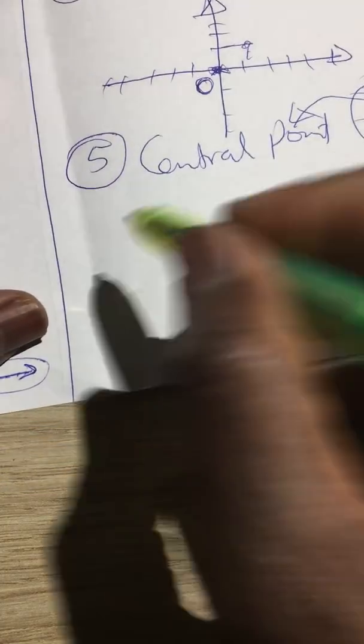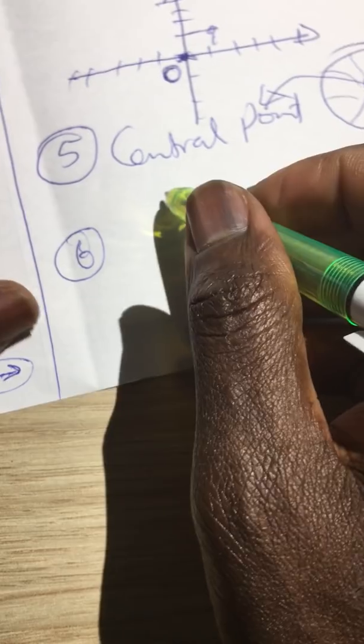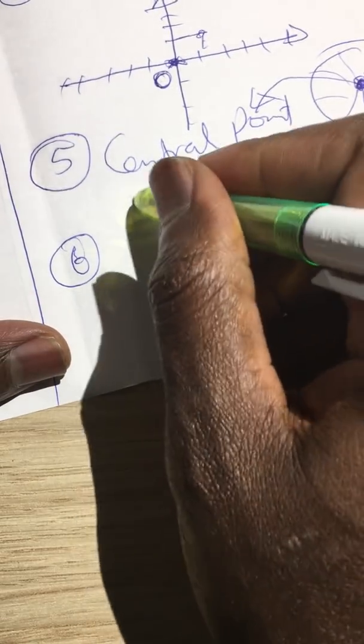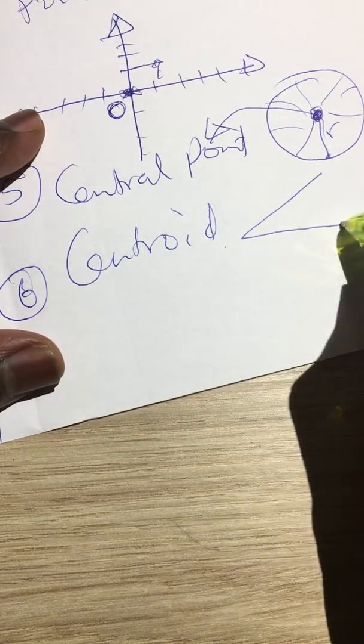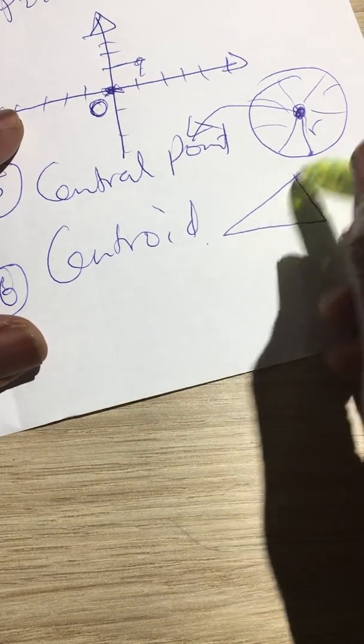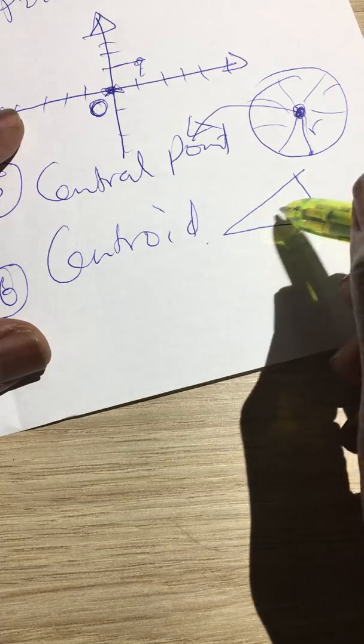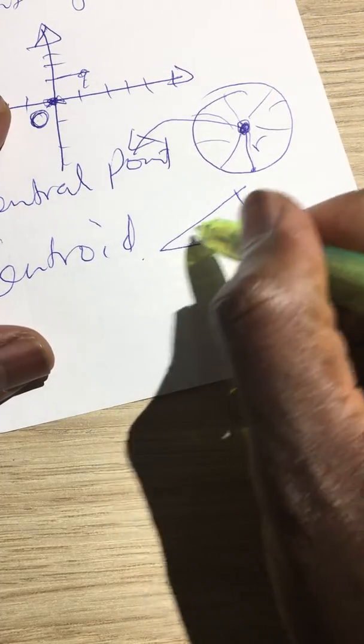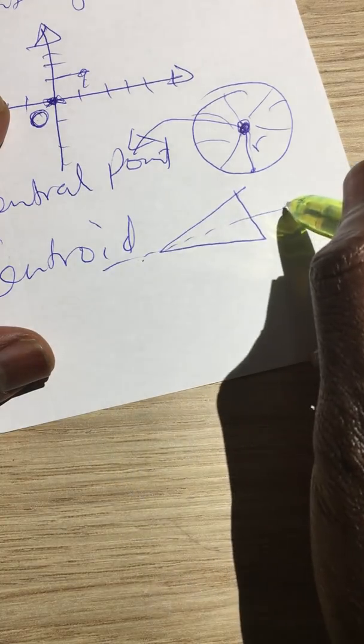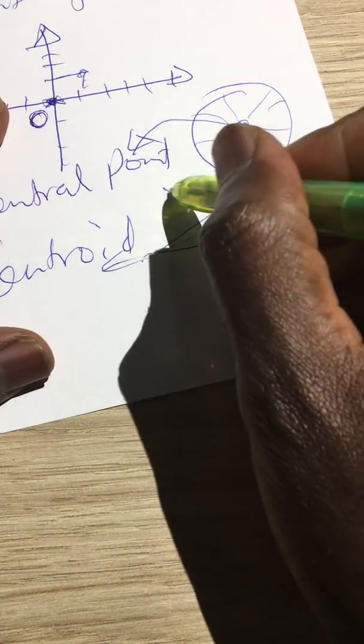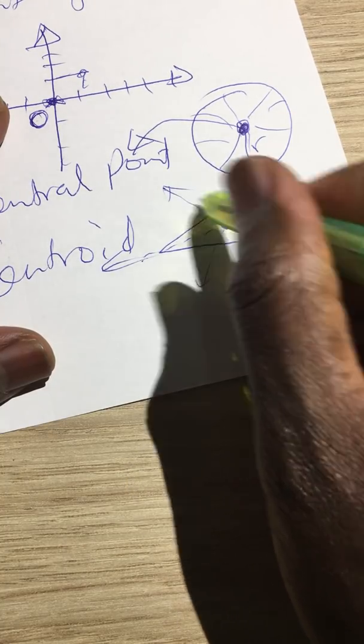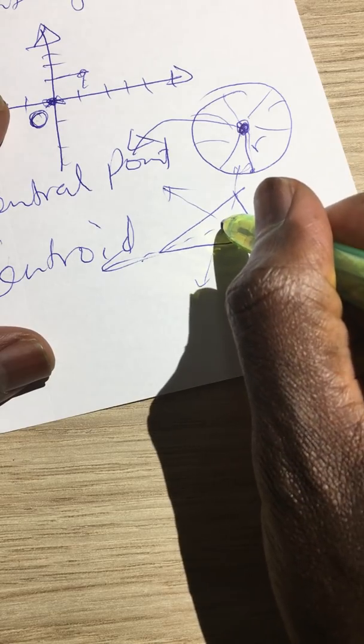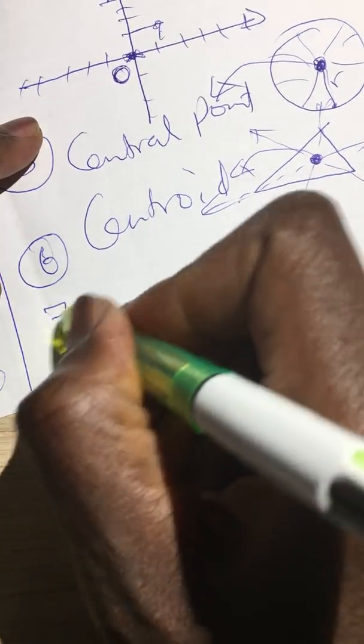The sixth type of point that I think is very good as well is the centroid. Centroid point is a point that comes as a result of joining the vertices of the triangle to each side at equal points. For example, you can draw a line from here and you can draw a line from that vertex and from that vertex as well. So where these three lines meet is our central point.